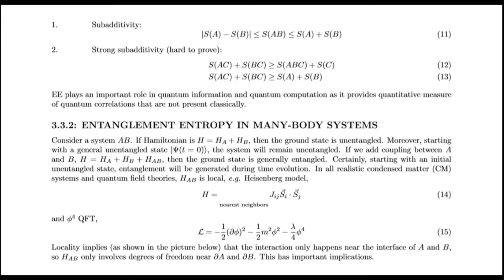Similarly, starting with an initial unentangled state, entanglement will be generated during time evolution. In all realistic condensed matter systems and quantum field theories, HAB is local. Heisenberg model and scalar field quantum field theory. Locality implies that the interaction only happens near the interface of A and B.